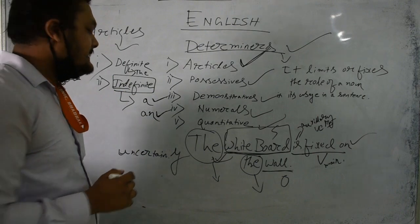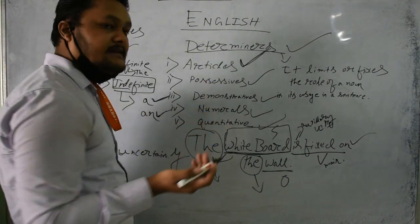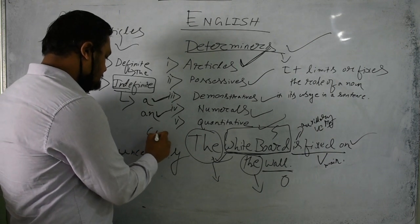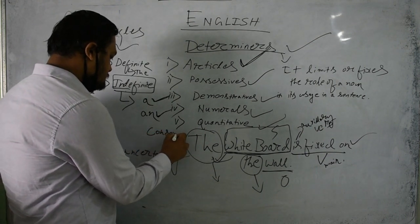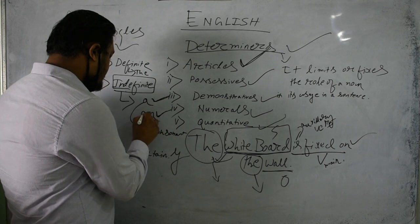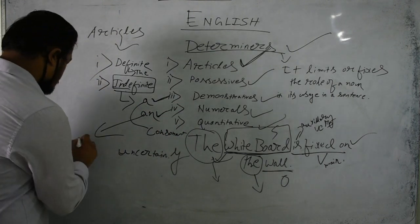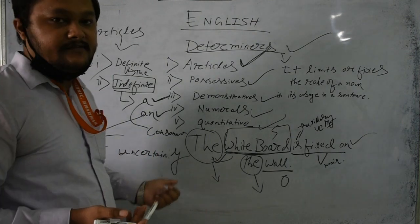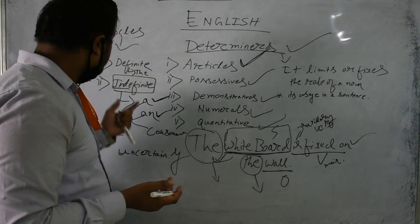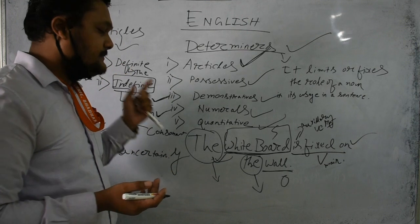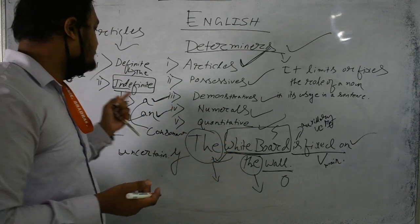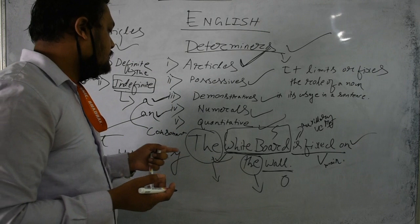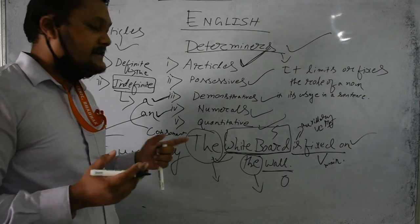'A' is always used before a consonant and 'an' is always used before a vowel — that is the only difference between 'a' and 'an.' The difference between definite and indefinite is: definite particularizes, whereas indefinite does not particularize, and we do not know which object or thing it is talking about.